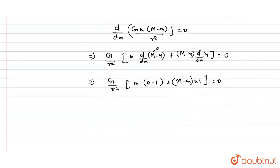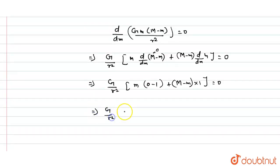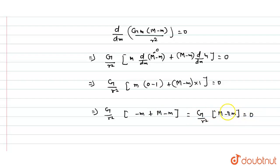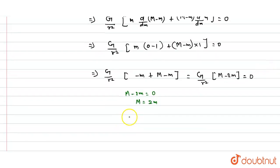So we get G by R squared times (m times minus one plus (M minus m) times one) equals zero, which gives G by R squared times (M minus 2m) equals zero. Therefore M minus 2m equals zero, so capital M equals 2m, and small m equals M divided by 2. Since M1 equals m, we get M1 equals M divided by 2.